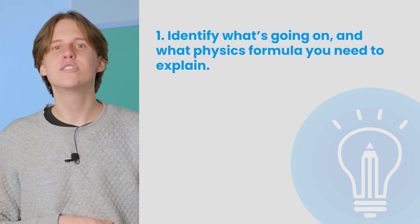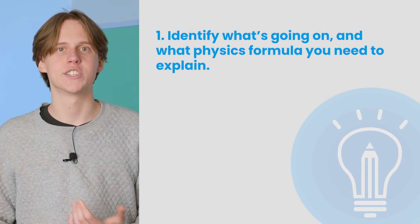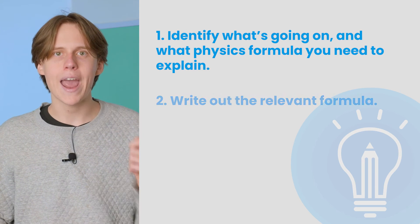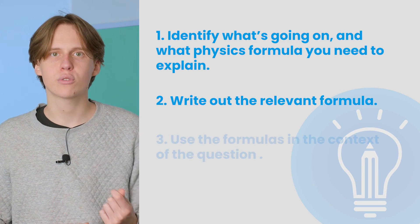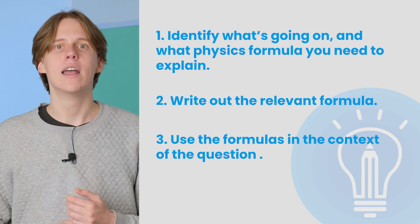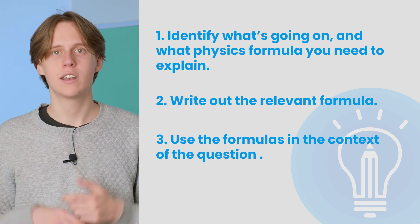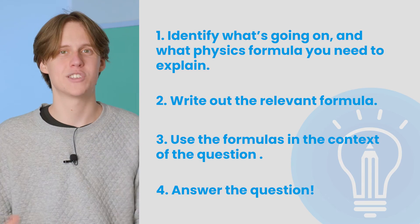Step 1: identify what's going on and what physics formula you need to explain. Step 2: write out the relevant formula. Step 3: use the formula in the context of the question. Step 4: answer the question. Even though you get a formula sheet in your exam, it's probably a really good idea to revise them and what they stand for beforehand. Remember, pressure and power are both represented by P in the formulas you're given, so you'll need to know which one is which.